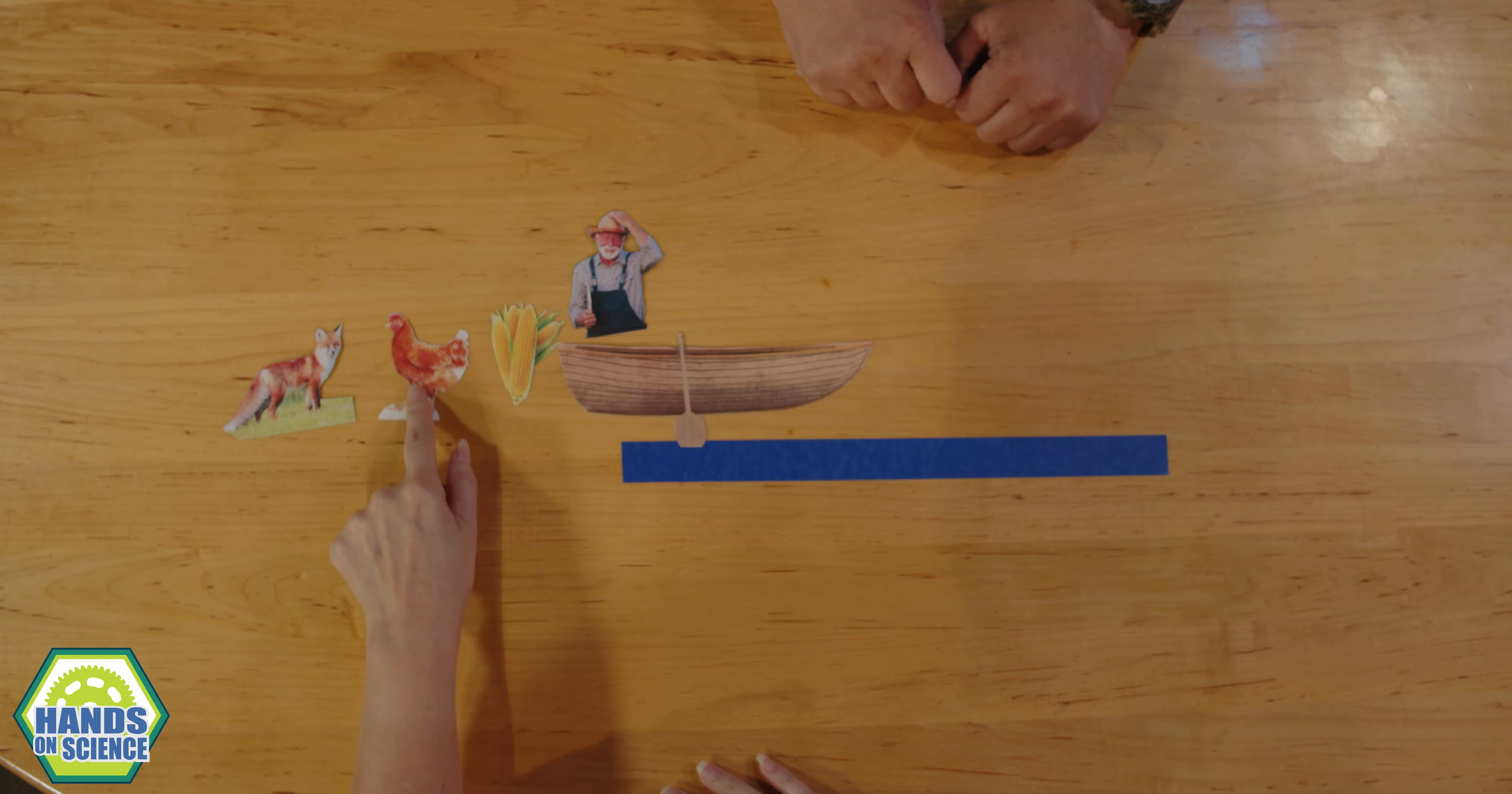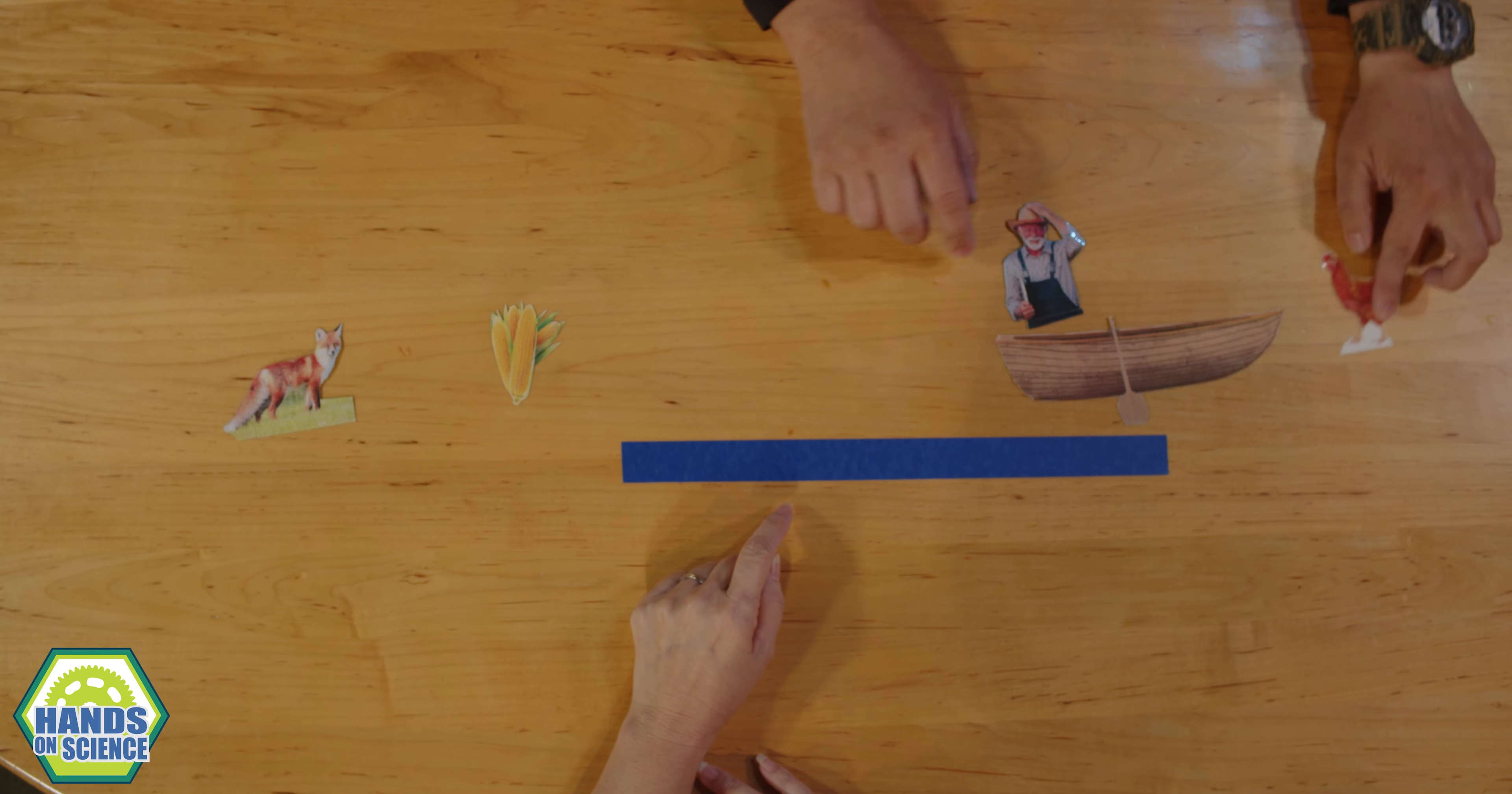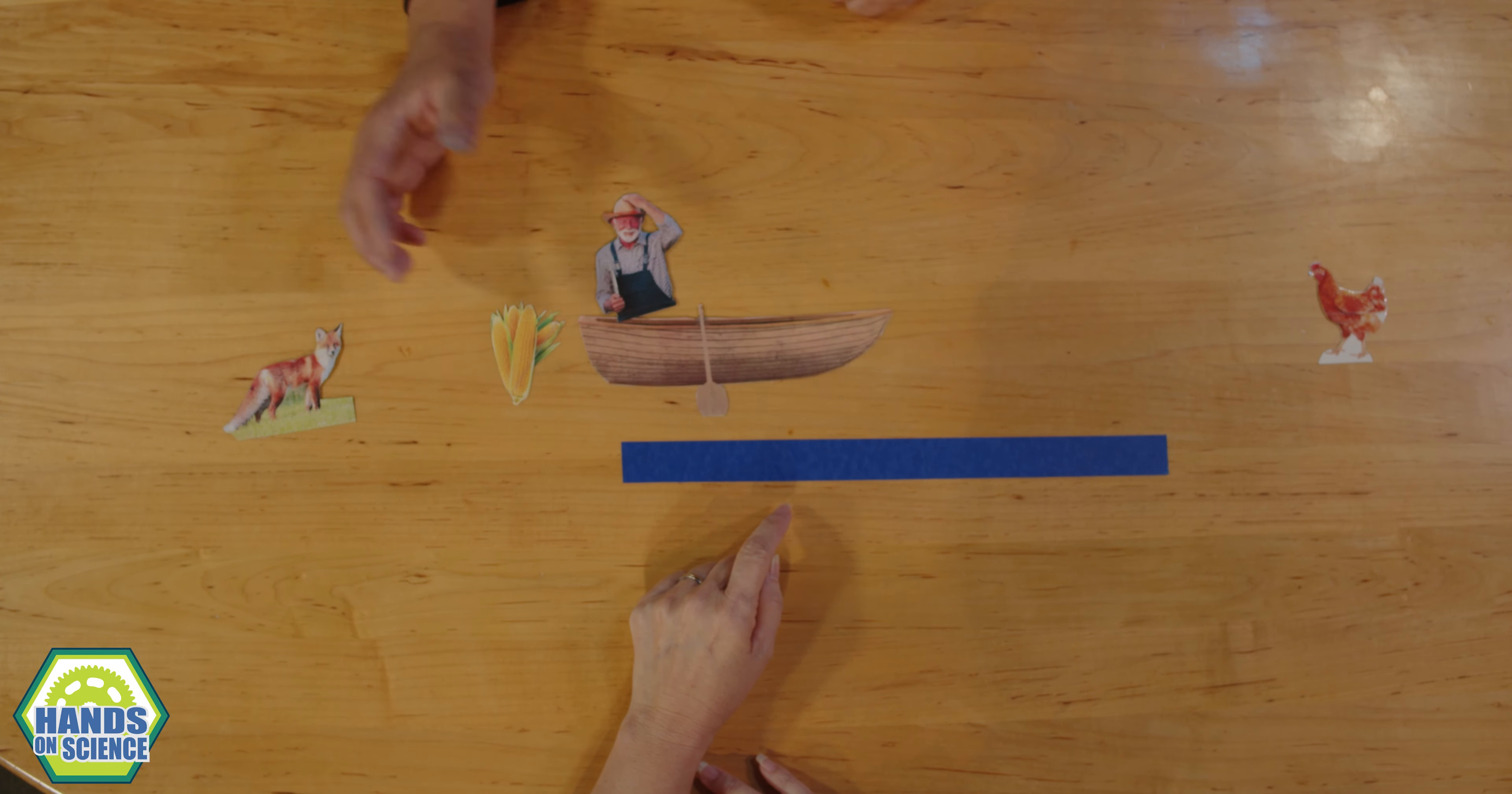So, how about we just take this then? Take the chicken. Take the chicken. Okay, so the farmer can take the chicken across the river. Right. Leaves them there. And then the farmer comes back. Right. And what does he do next?